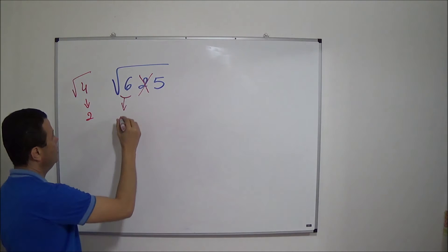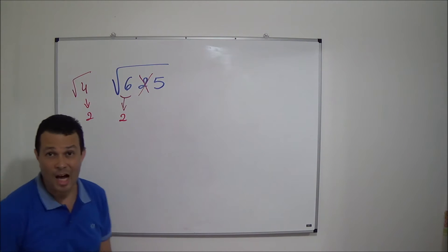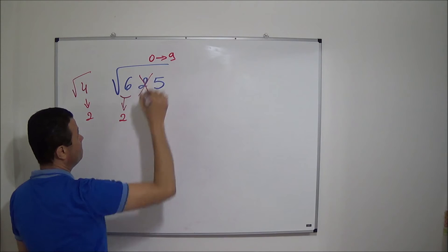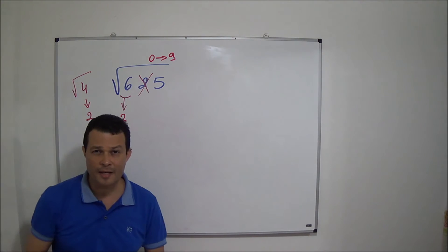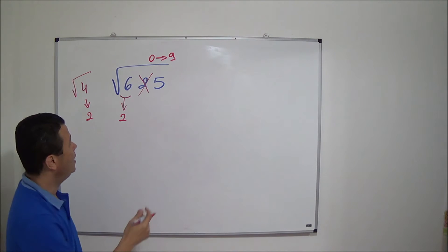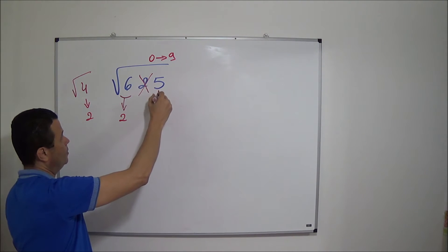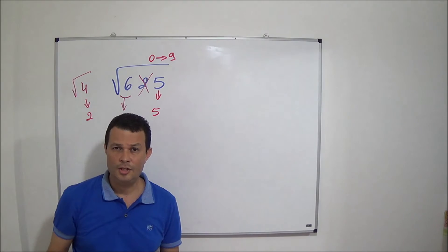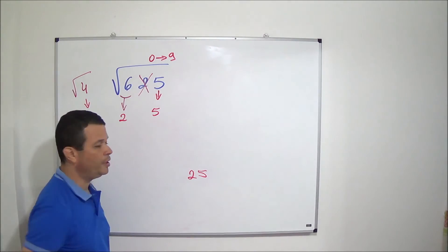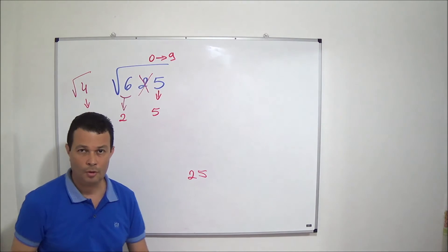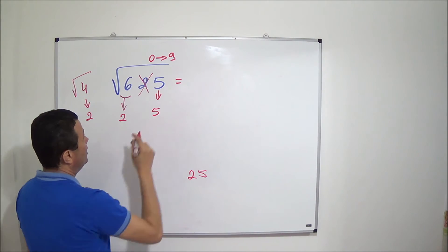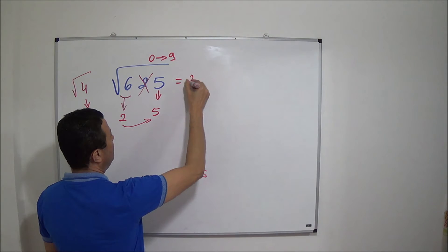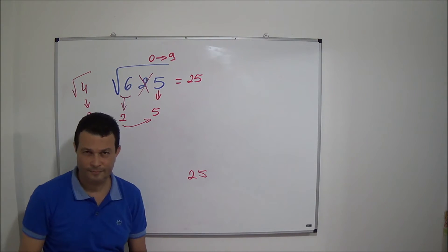And I put here number 2. Now, I have to find out one number from 0 to 9 that multiplied by itself ends in 5. That is number 5. Because 5 times 5 is 25. And 25 ends in 5. So, the square root of this number is equal to 25. Easy.